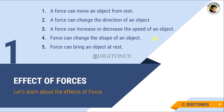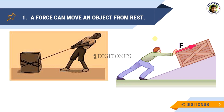Let us discuss each point one by one. First, let us see how a force can move an object from rest. Like there is a big box which is at rest, and I have to move it. So I will either push it very hard or pull it. Whenever I push it or pull it, the object will start moving from the rest position. So a force can move an object from rest.